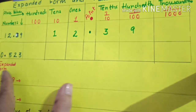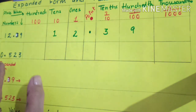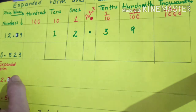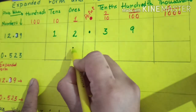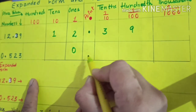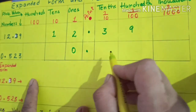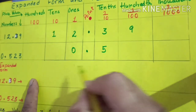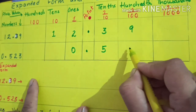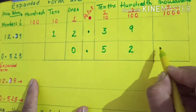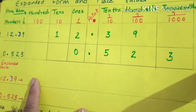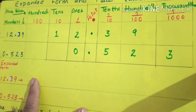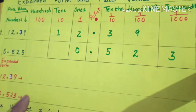Similarly for 0.523, there is no whole number part, so we write zero at the ones place. After the decimal point, five is at the tenths place, two is at the hundredths place, and three is at the thousandths place. I have arranged these two numbers in the place value chart.